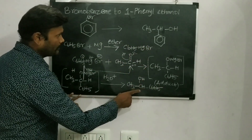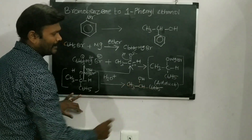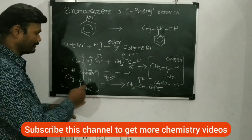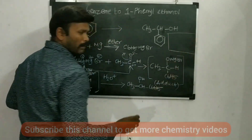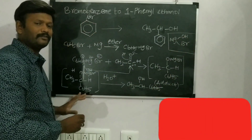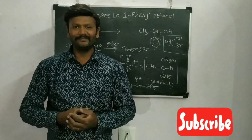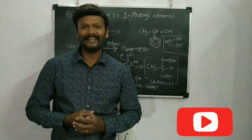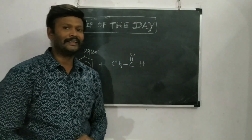That is 1-phenyl ethanol — I will be getting 1-phenyl ethanol. Along with that I will be getting the Grignard hydrolysis byproduct, which is Mg(OH)Br. Thank you so much for watching — please share with others to get the benefit, and don't forget to subscribe to my channel and put a like on this video.